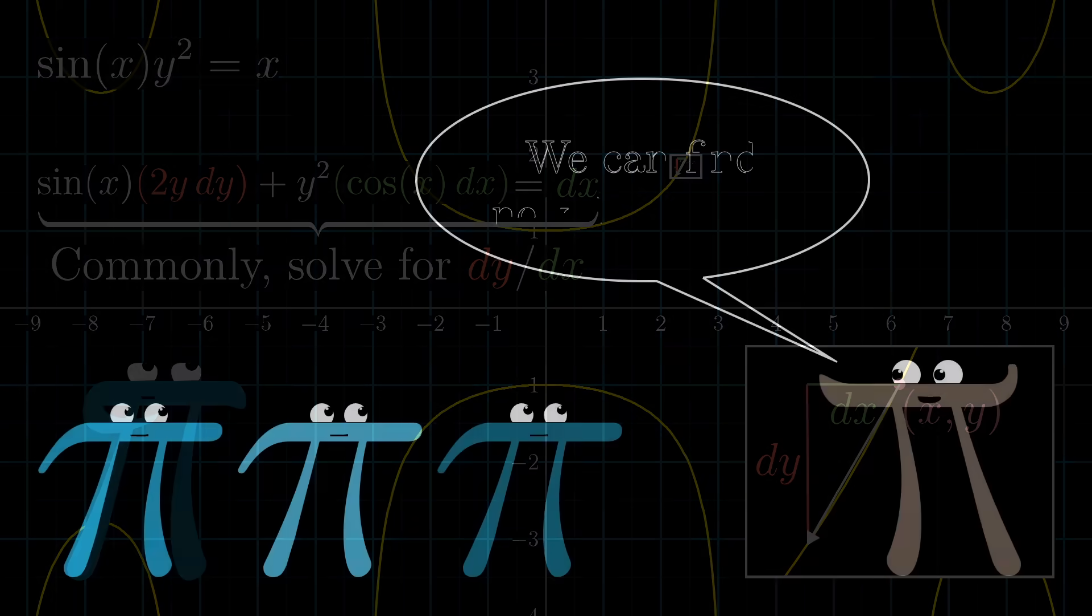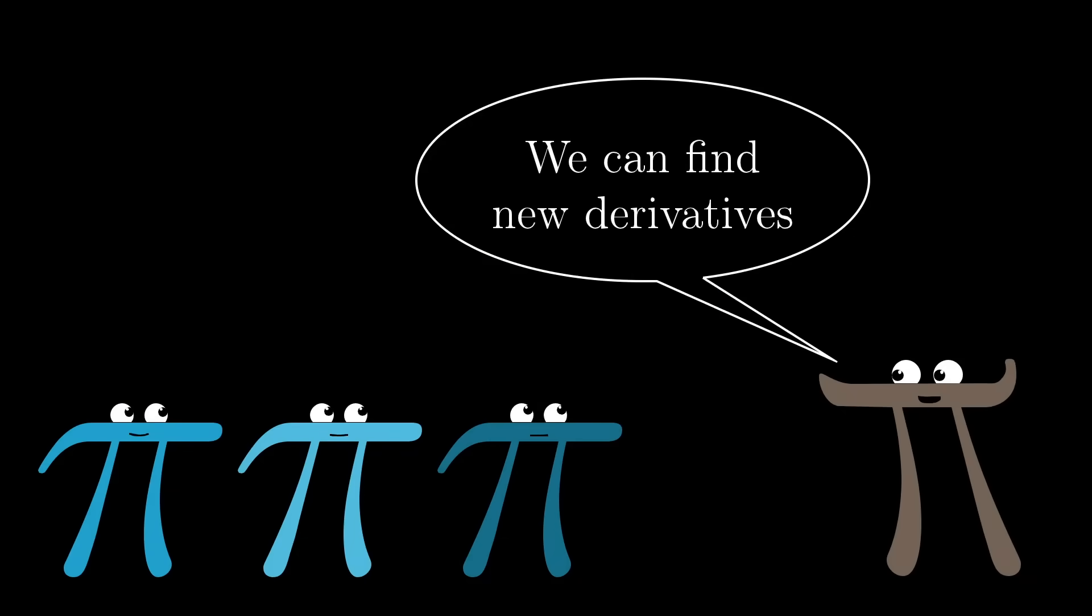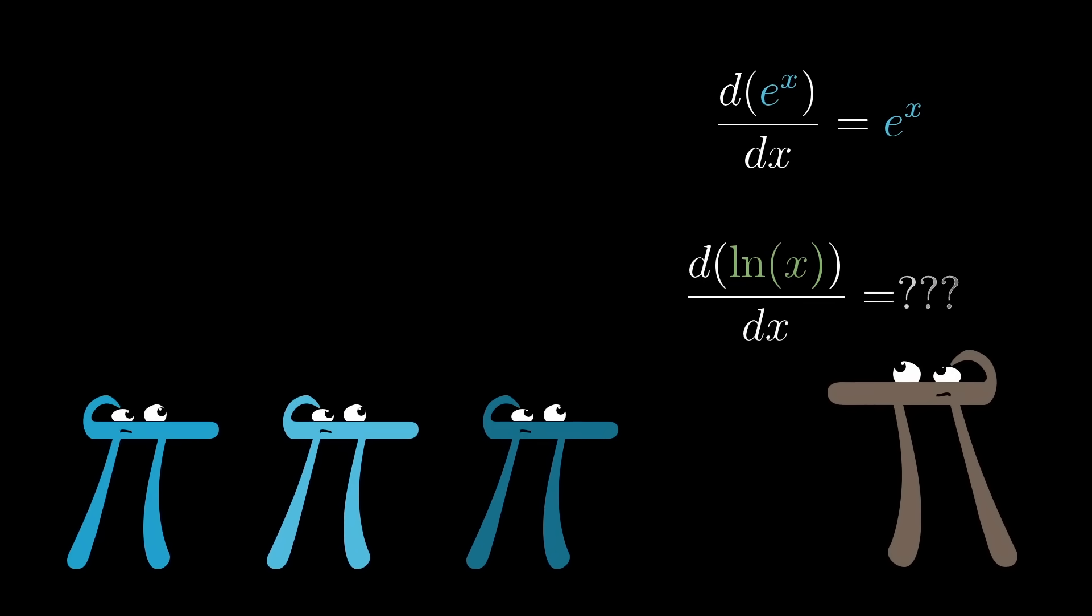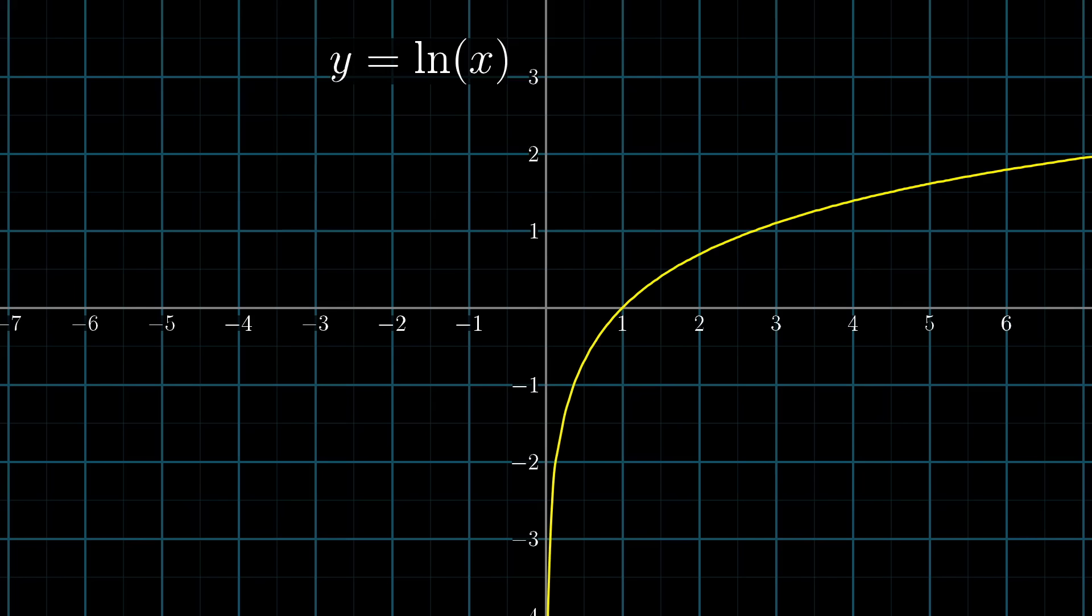As a final example here, I want to show you how you can actually use this technique of implicit differentiation to figure out new derivative formulas. I've mentioned that the derivative of e^x is itself, but what about the derivative of its inverse function, the natural log of x? Well, the graph of ln(x) can be thought of as an implicit curve. It's all of the points (x,y) on the plane where y = ln(x). It just happens to be the case that the x's and y's of this equation aren't as intermingled as they were in our other examples.